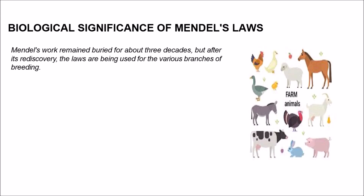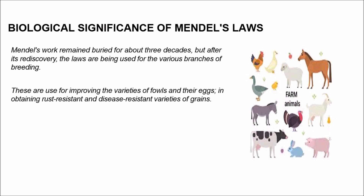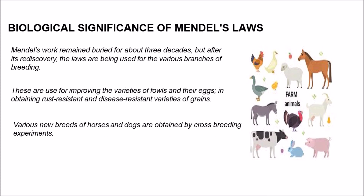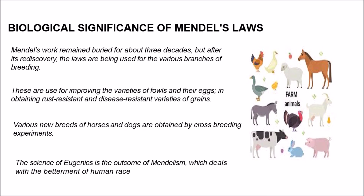Coming to the biological significance of Mendel's law: Mendel's work remained buried for about three decades, after which it was rediscovered by scientists like Tschermak and others. The laws are used in various branches of breeding — for improving varieties of fowls and their eggs, and for obtaining rust-resistant and disease-resistant varieties of grains. Various new breeds of dogs and horses are obtained by crossbreeding experiments. The science of eugenics, which deals with the betterment of the human race, is an outcome of Mendelism.